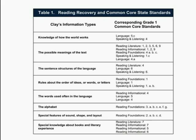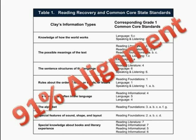In An Observation Survey of Early Literacy Achievement, Marie Clay delineated the types of information that all readers use to carry out the complex task of reading, shown in the left-hand column of the chart on the screen. These eight kinds of information can be used to categorize most of the standards for grade 1 shown on the right side. In fact, of the 41 standards for grade 1, greater than 90% show alignment to Reading Recovery teaching and practices.